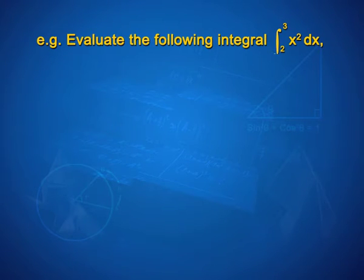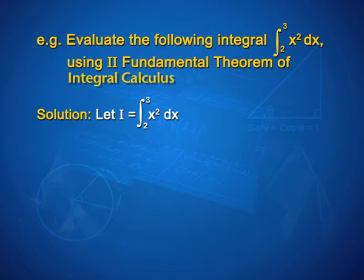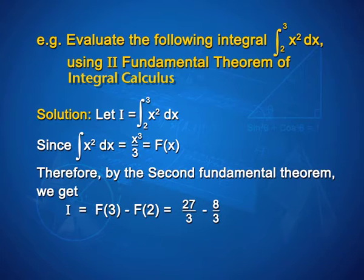Let us solve some examples using the fundamental theorem of integral calculus. Evaluate the integral from 2 to 3 of x² dx using the second fundamental theorem. For the solution, let I = integral from 2 to 3 of x² dx. Since integral of x² dx = x³/3, that is F(x). Therefore, by the second fundamental theorem, I = F(3) − F(2) = 27/3 − 8/3. On solving, we get 19/3 as the answer.